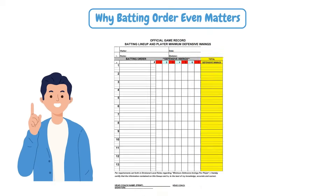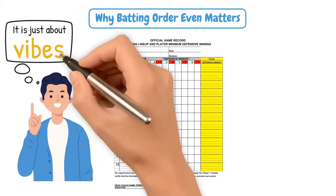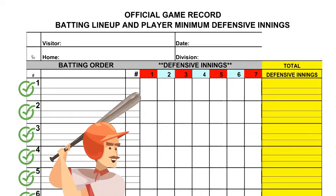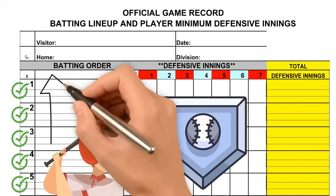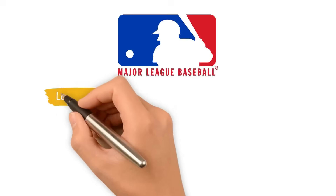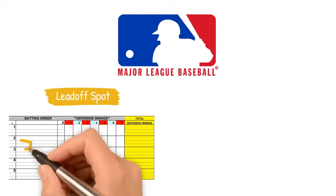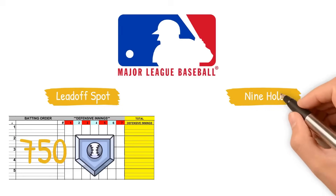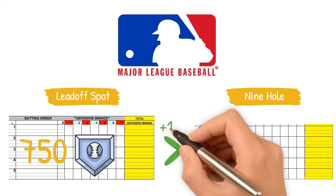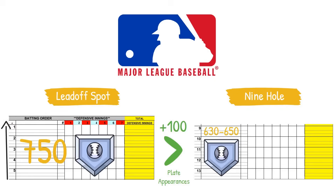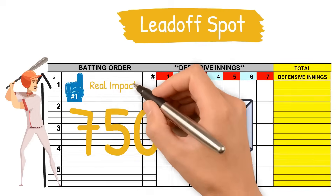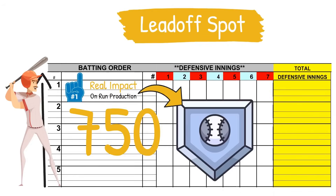If you're a casual fan, you might just think batting order is about the vibes. After all, everybody is going to get that at-bat eventually, right? Wrong. The top of the lineup comes up to the plate significantly more over the course of a full season than the bottom. In Major League Baseball, the leadoff spot gets around 750 plate appearances over the course of a season, while the nine-hole might only get 630 to 650 — potentially over 100 additional plate appearances for the top of your order.